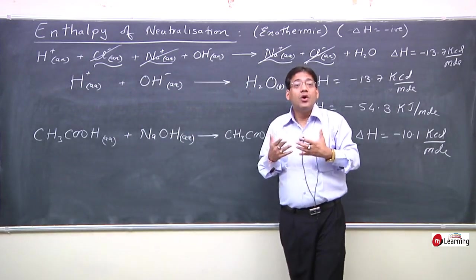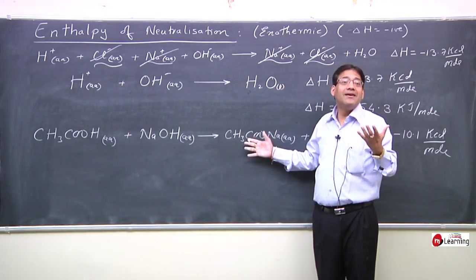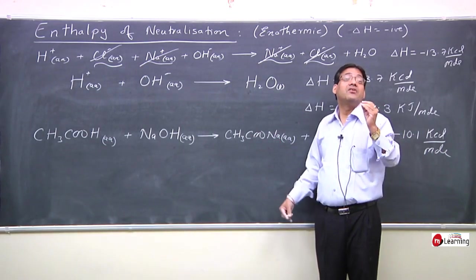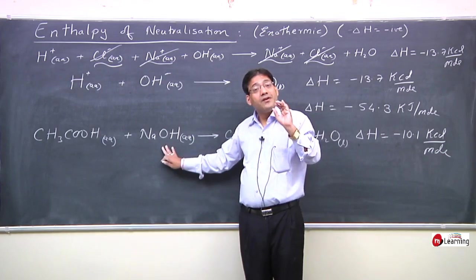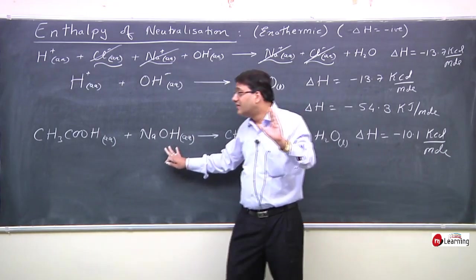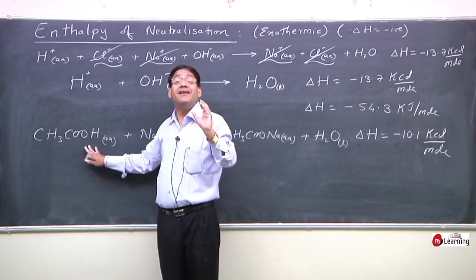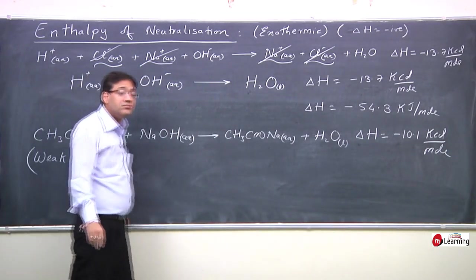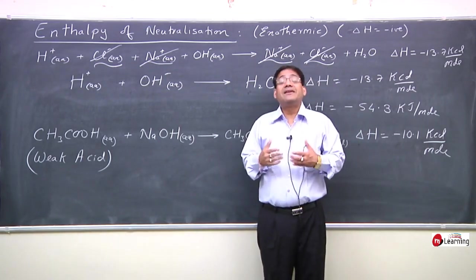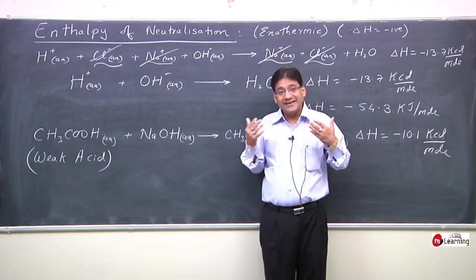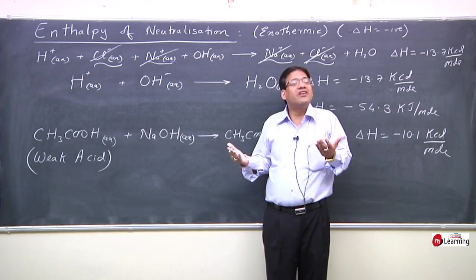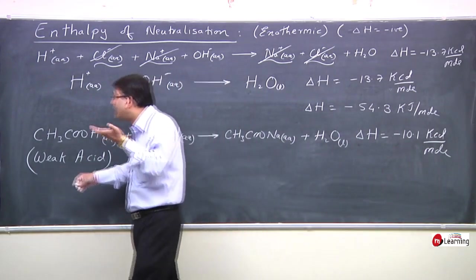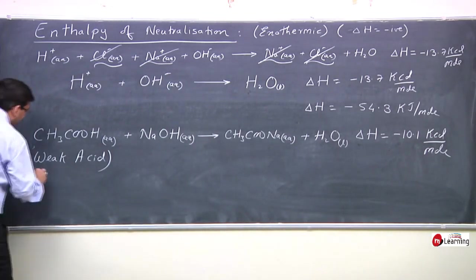Why is this reaction less exothermic? It is because we are not using a strong acid. The base is strong (NaOH), but the acid used is acetic acid, which is a weak acid — in fact a very weak acid. A weak acid is one which is not completely ionized or dissociated in solution.